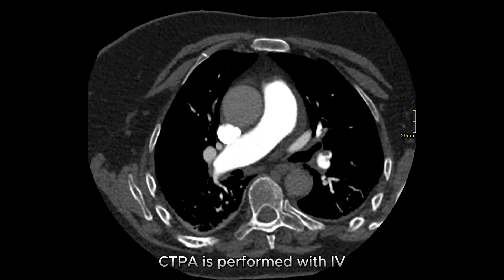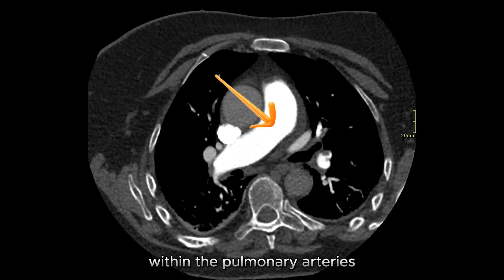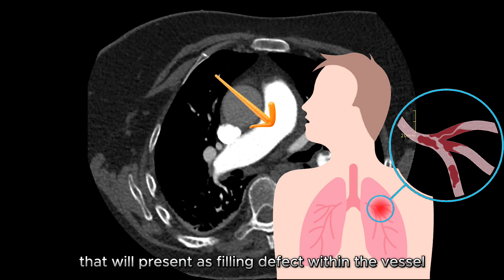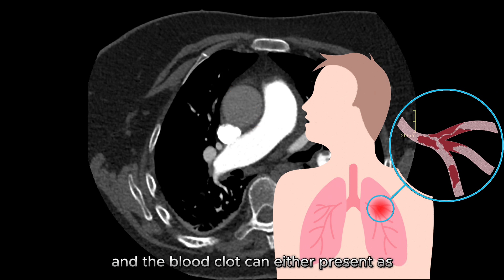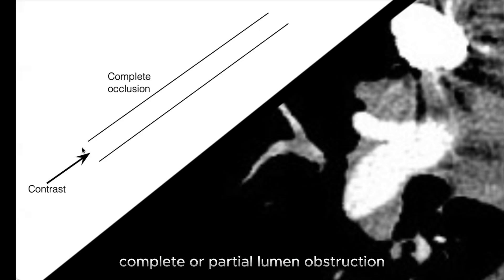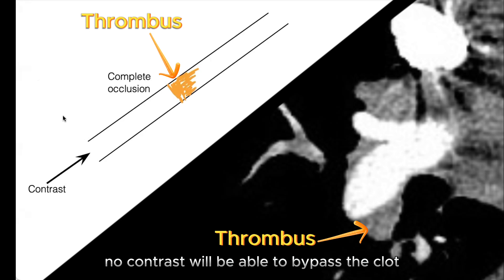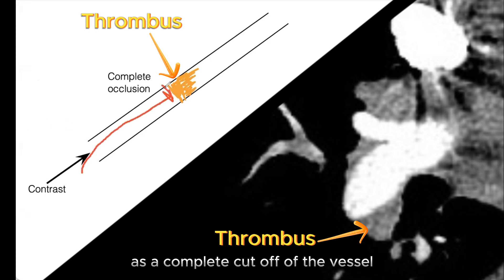CTPA is performed with IV contrast media for opacification within the pulmonary arteries. This allows direct visualization of blood clots that will present as filling defects within the vessel. The blood clot can either present as complete or partial lumen obstruction. With complete lumen obstruction, no contrast will be able to bypass the clot, and this will appear as a complete cutoff of the vessel.